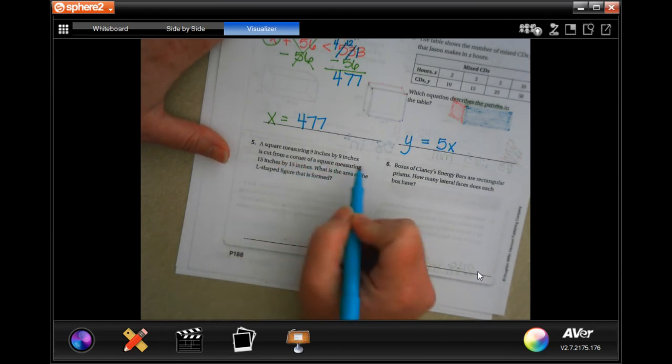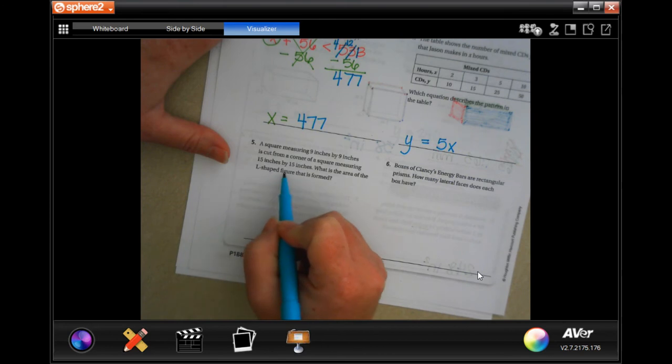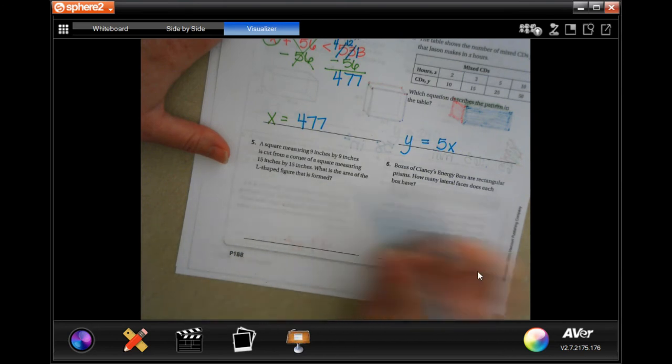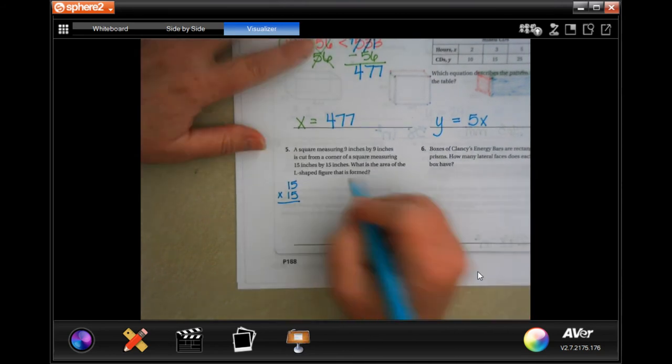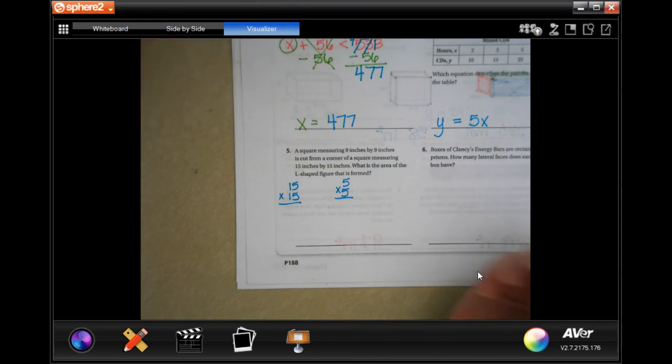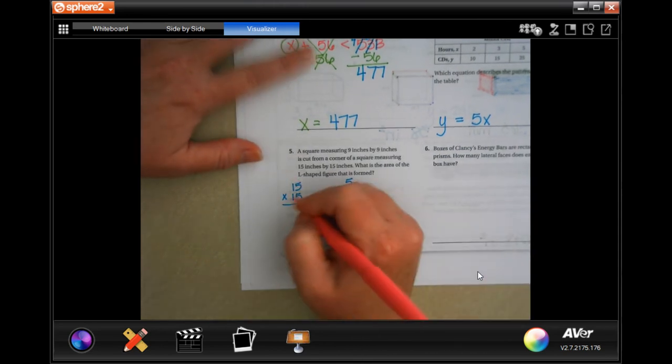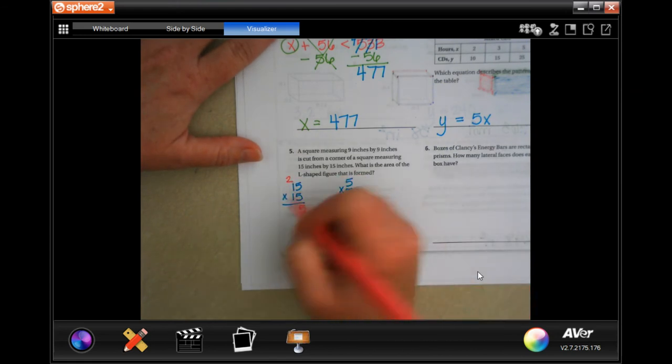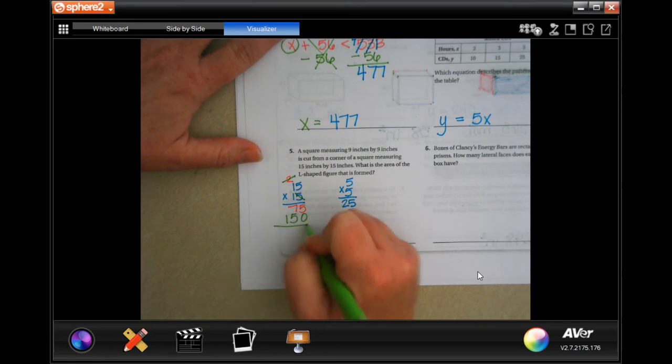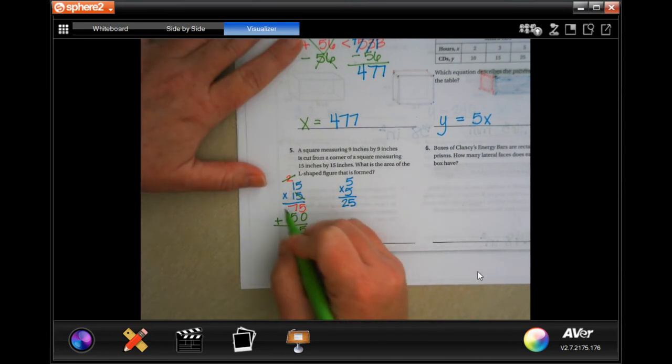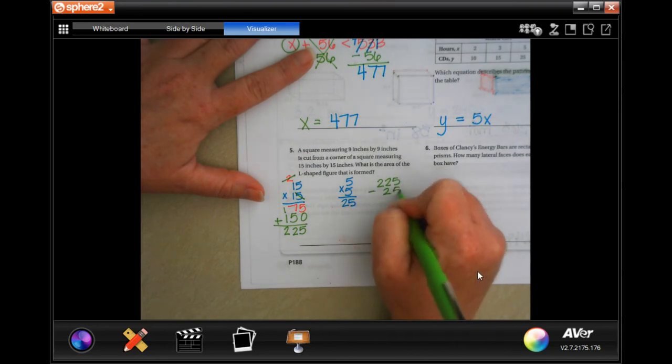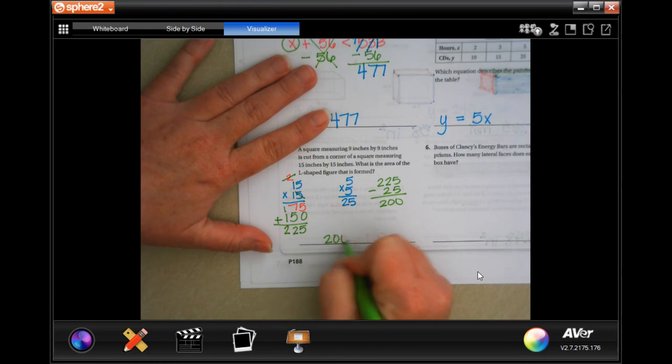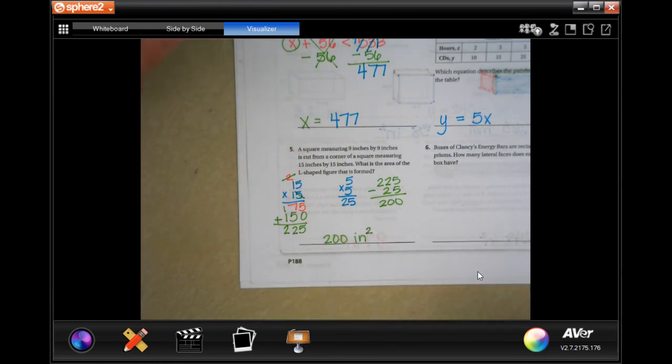A square measuring 9 inches by 9 inches is cut from a corner of a square measuring 15 by 15 inches. What is the area of the L-shaped figure that is formed? All right. Well, let's do 15 by 15. And then we're going to subtract the 5 times 5. So, we're going to subtract 25. So, 5 times 5 is 25. Carry the 2. 5 times 1 is 5. Plus 2 is 7. We're going to go and tick, tack, and toe. And then 1 times 15 is 15. So, let's add them up. 5, 2, carry the 1, 2. So, 225 minus 25. It's just going to be 200. 200 inches. And we multiply it inches by inches. So, it's inches squared.